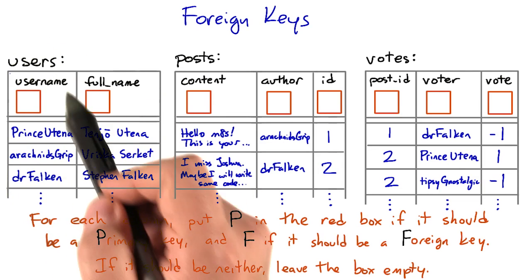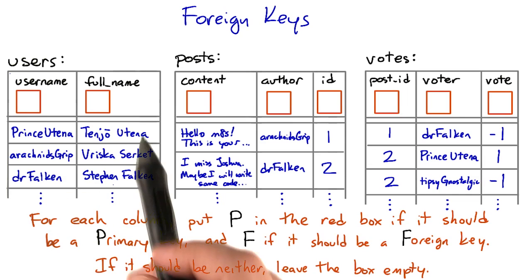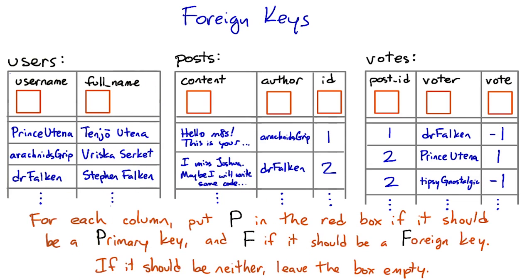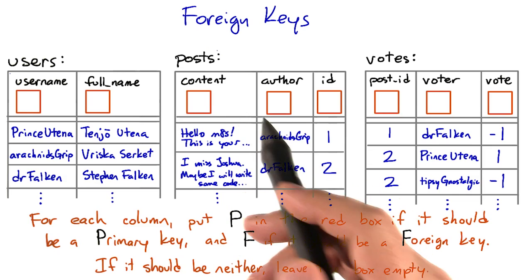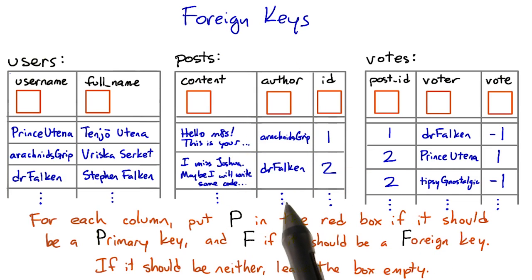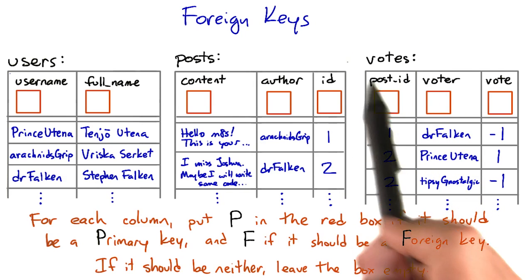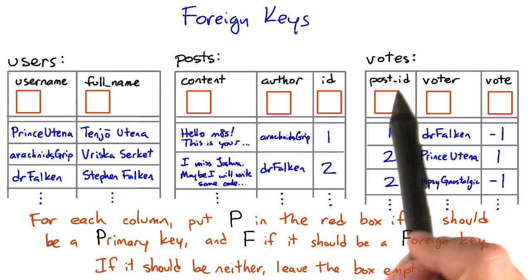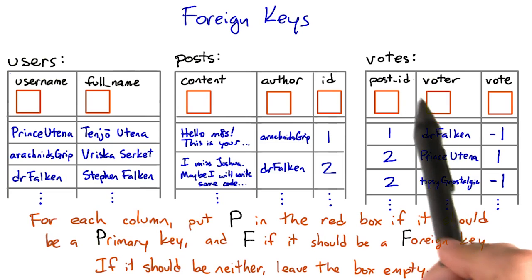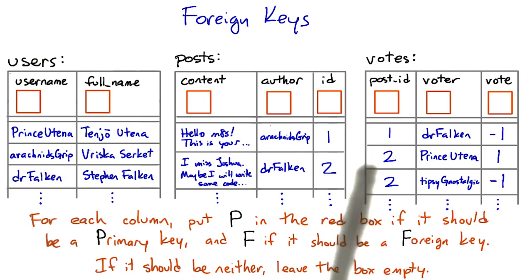In the users table, we have a username — or handle, or alias — and the user's full name. In the posts table, we have the post content, the author's username, and an ID number for the post. And in the votes table, we have the ID number of a post, the username of somebody who voted on that post, and a one or minus one for whether they liked it or disliked it.